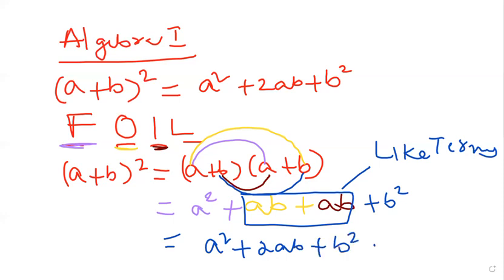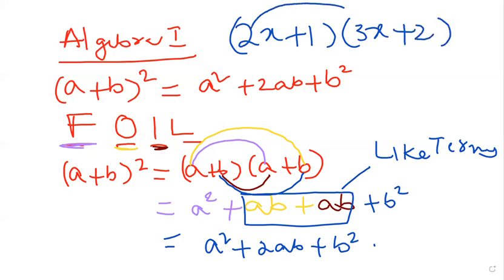So this FOIL method can be used for many of these kinds of problems, not only for (a+b)². Even if you have, for example, (2x+1)(3x+2), use the FOIL method: First, then Outer, then Inner, then Last. So there you go. Much easier.